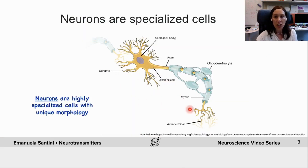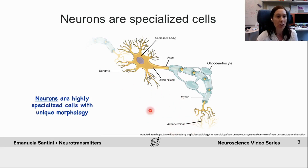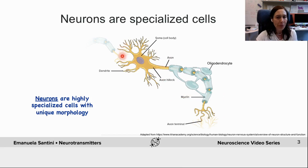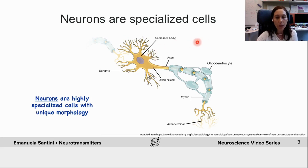Neurons are highly specialized cells with unique morphology and they come in all shapes and dimensions. This image is just a representative image of an average neuron. As any other cell, they have a cell body where the nucleus containing the genetic material is located, and they also have multiple short processes called dendrites and a single process called an axon.